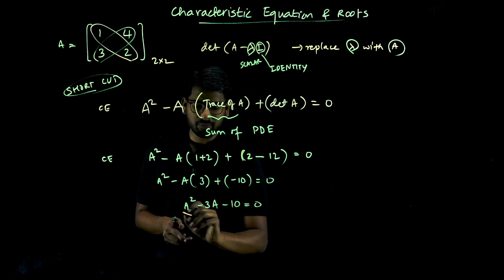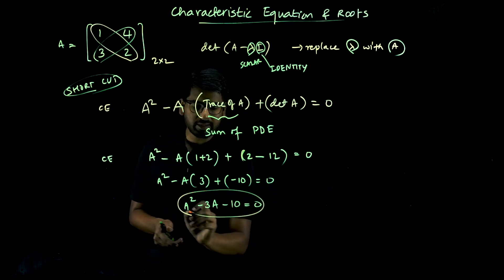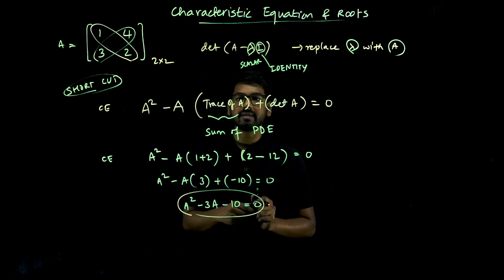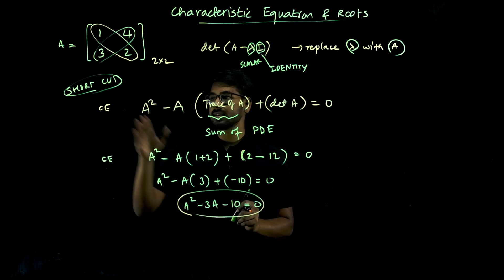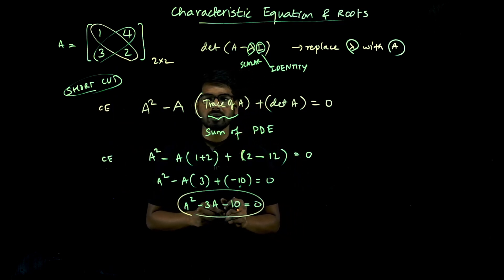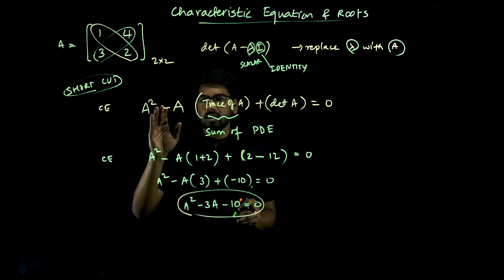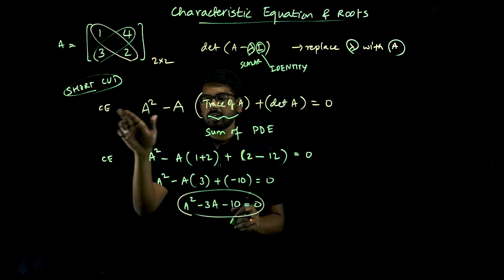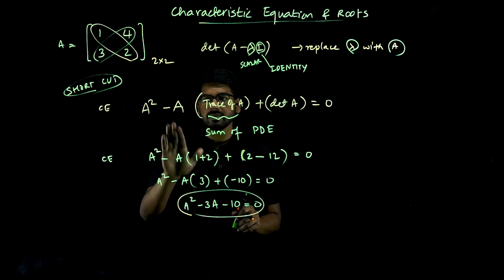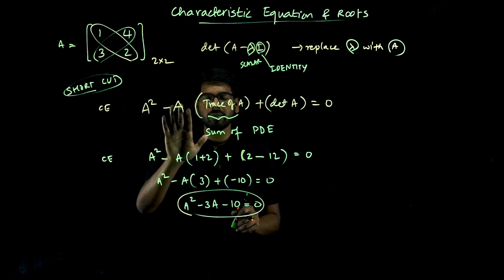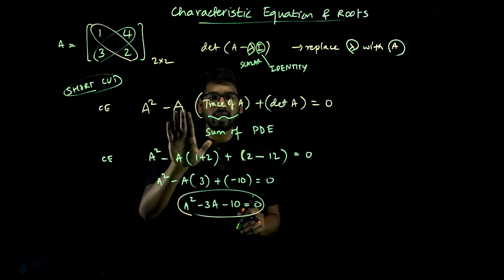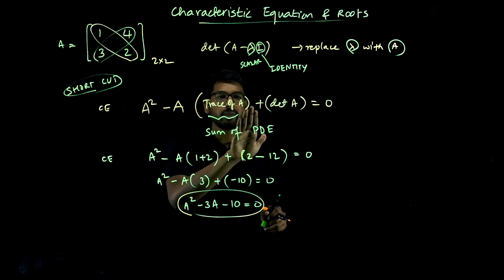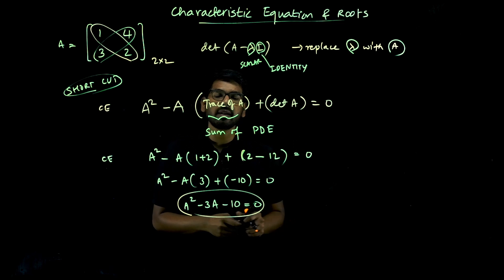This is the characteristic equation of matrix A. This is the shortcut version. You have to remember: characteristic equation is lambda squared minus lambda times trace of A plus determinant of A.